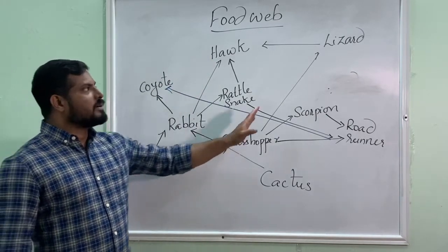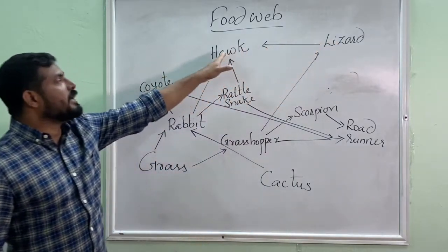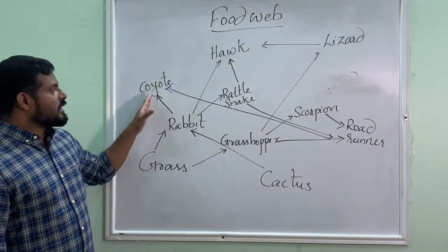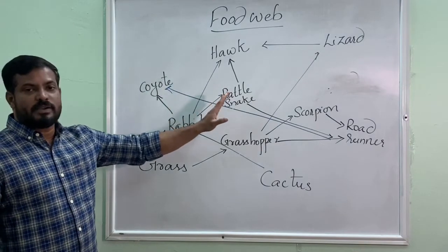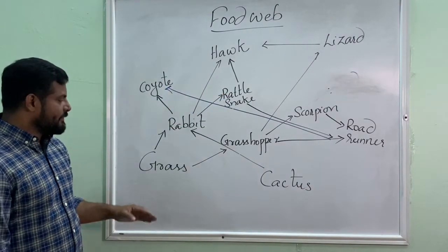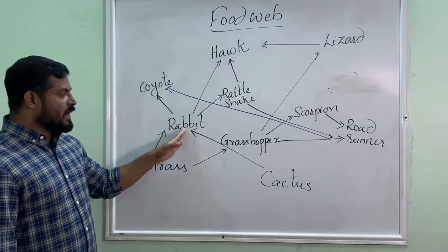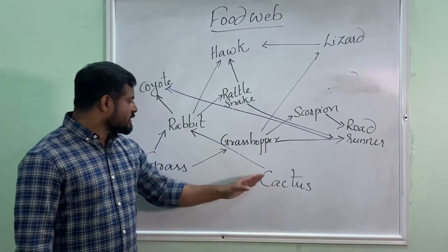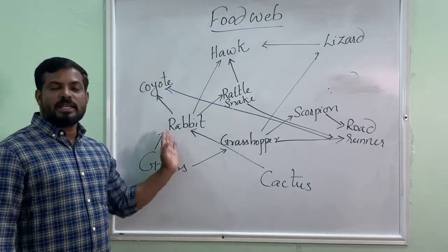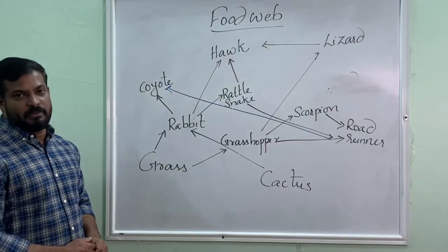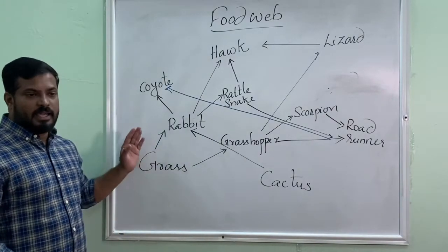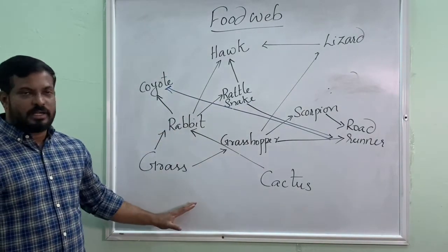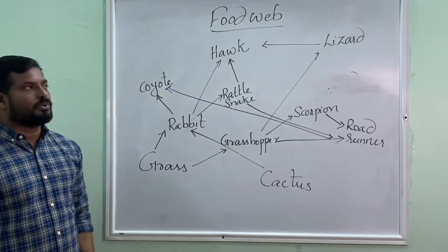Grasshopper consumed by lizard, then it is consumed by hawk. Cactus consumed by rabbit, coyote. So here you can notice various types of food chains — grass consumed by rabbit, grass consumed by grasshopper, cactus consumed by rabbit. Various food chains you can notice in this food web. That means the food web shows various food chains gathered together and it shows the movement of food through a habitat.